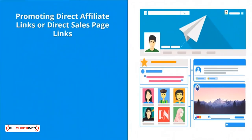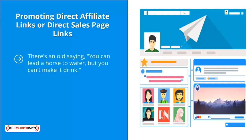Mistake four: Promoting direct affiliate links or direct sales page links. There's an old saying — you can lead a horse to water, but you can't make it drink. By the same token, you can get a lot of people on Facebook to click on your links, but don't expect them to convert once they go to that affiliate sales page or your own direct sales page. Why won't people buy? After all, they did click on your ad, right?